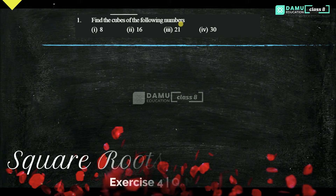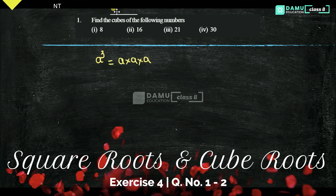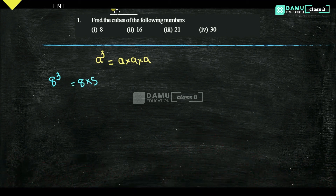What is meant by cube? A cube means the same quantity is multiplied three times. We write it in exponential form as a³. So let's take 8 cube — that will be 8 into 8 into 8.